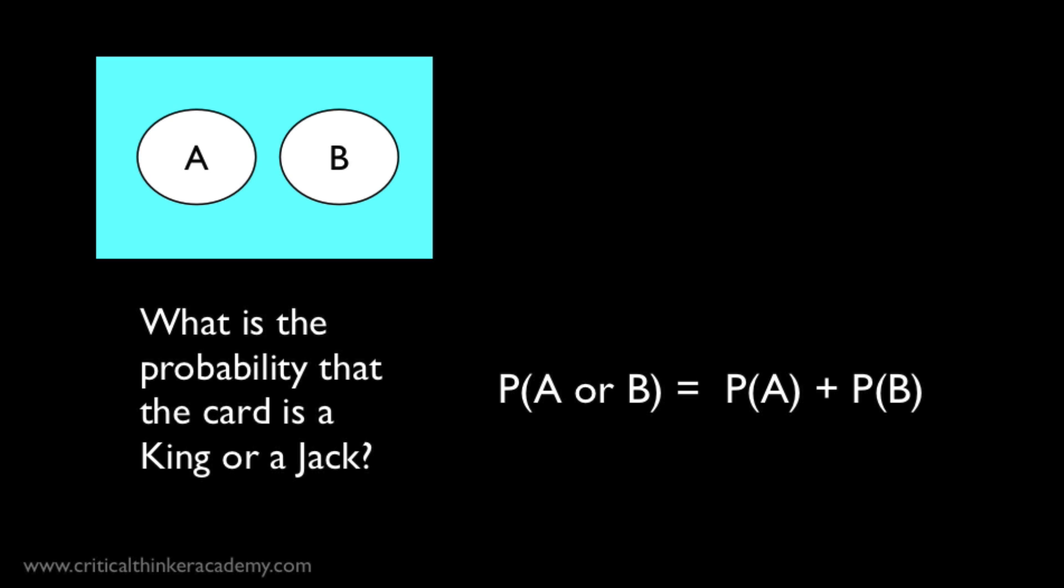Now let's consider a different case. What is the probability of drawing a card that is either a king or a spade? Let's start with the first part. What is the probability of drawing a king? Well, there are four kings in a deck of cards, one for each suit. So that's just four out of fifty-two.